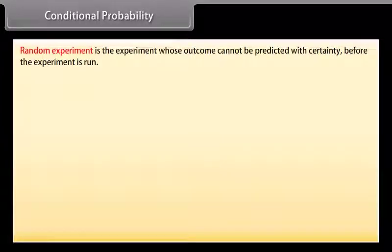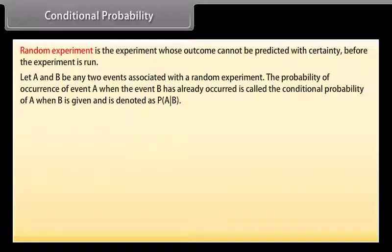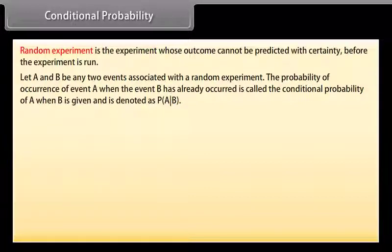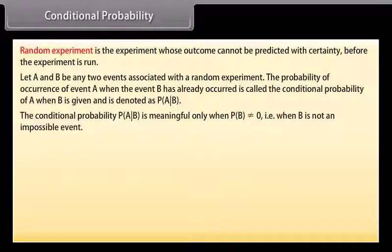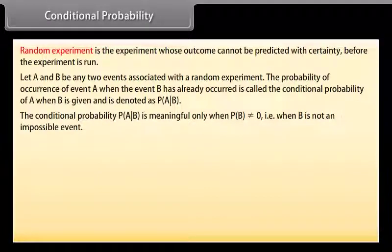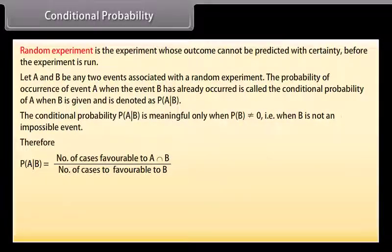Conditional Probability: A random experiment is one whose outcome cannot be predicted with certainty before it is run. Let A and B be any two events associated with a random experiment. The probability of occurrence of event A when event B has already occurred is called the conditional probability of A given B, denoted as P(A|B). This is meaningful only when P(B) ≠ 0. It equals the number of cases favorable to A∩B divided by the number of cases favorable to B.